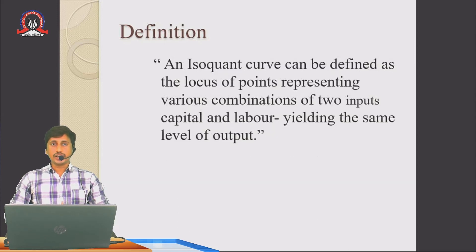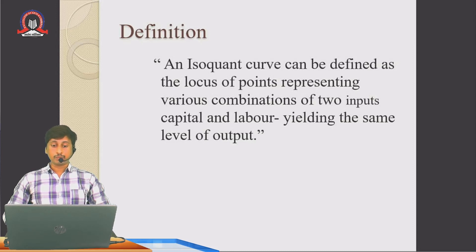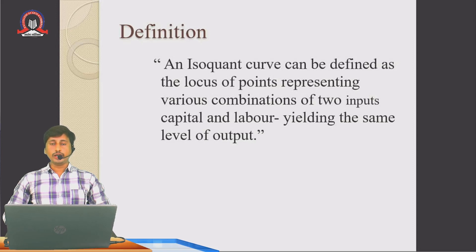An isoquant can be defined as the locus of points representing various combinations of two inputs — that is capital and labor — yielding the same level of output. You might not be able to understand the concept very clearly from this definition, but with the help of the isoquant schedule and isoquant curve, the concept will definitely become clear.